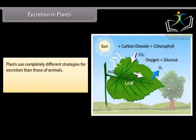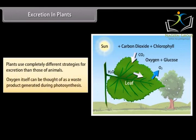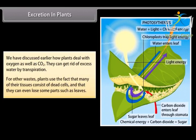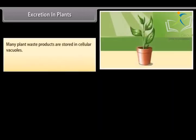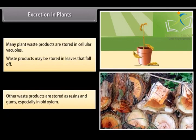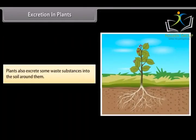Plants use completely different strategies for excretion than animals. Oxygen itself can be thought of as a waste product generated during photosynthesis. Plants can get rid of excess water by transpiration. For other wastes, plants use the fact that many of their tissues consist of dead cells, and they can even lose some parts such as leaves. Many plant waste products are stored in cellular vacuoles, or in leaves that fall off. Other waste products are stored as resins and gums, especially in old xylem. Plants also excrete some waste substances into the soil around them.